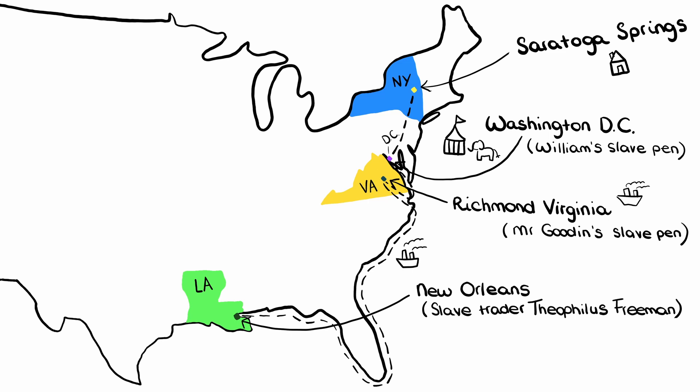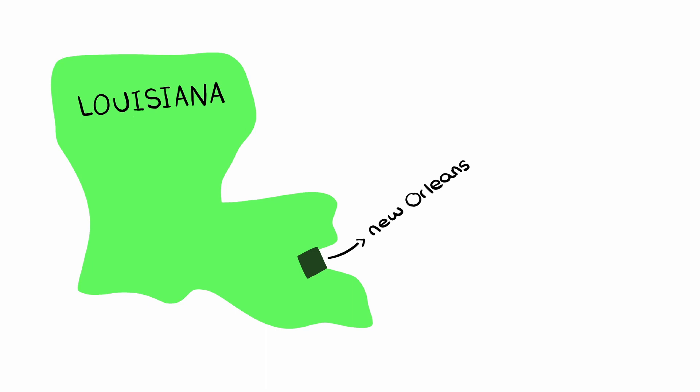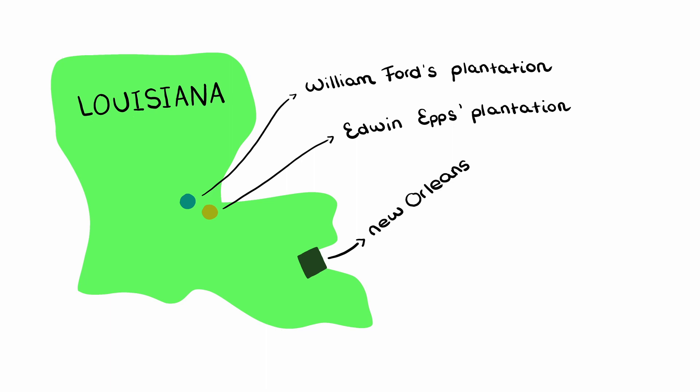There are three plantations relevant to the story. First, William Ford's plantation in Louisiana in the Bayou Buff region. Then Master Epps' plantation — Solomon is sold to Master Epps after having served Master Ford. And lastly, Judge Turner's sugar plantation, where he harvested sugar cane. But most of his 12 years, Solomon spends on Master Epps' plantation.